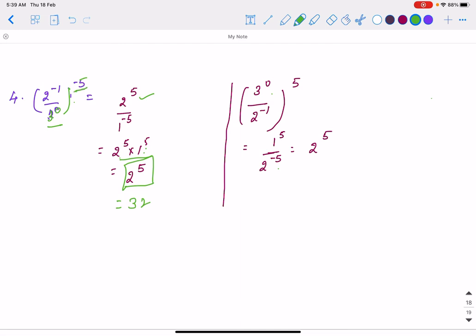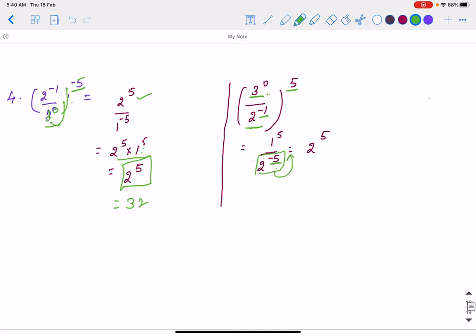Or if minus 5 is there, we take the reciprocal. 3 to the power 0 will be in numerator, 2 to the power minus 1 is in denominator. Now it is 1. Here it is minus 1 into 5 will be minus 5. Again if you take its denominator to numerator, power will be positive. 32 will be your answer. This way you solve the powers with exponent when negative powers are there.